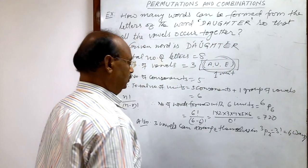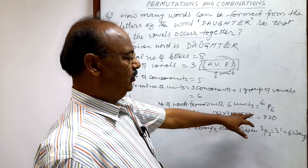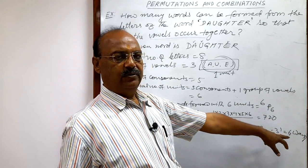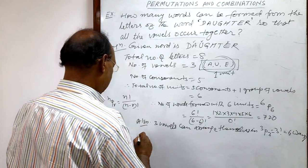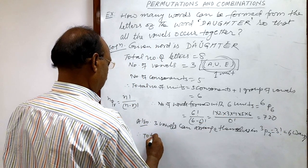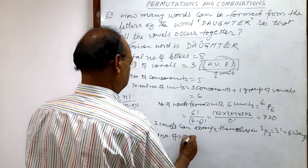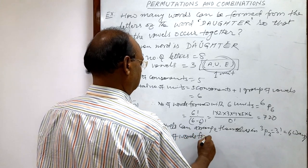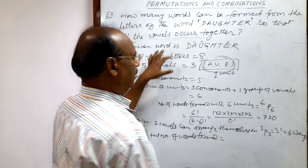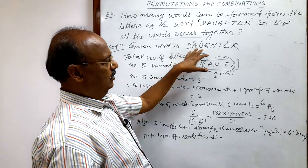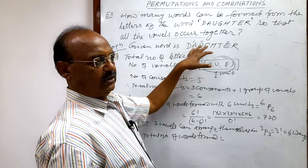So total number of words formed will be 720 into 6. So therefore, total number of words formed under this condition, means with the help of letters of the word daughter, keeping all the vowels together,